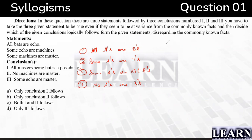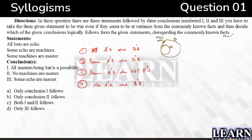For 'all A's are B's': the minimum condition is where A is inside B — A is a smaller circle just touching inside B. The maximum condition is where the whole set of A and B are the same — they completely overlap. So for 'all A's are B's' there are two possible Venn diagram representations.